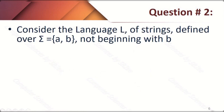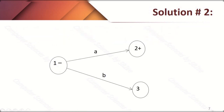Question number two: consider the language L of strings defined over sigma {a, b} not beginning with letter 'b'. The condition is that the machine must not begin with letter 'b'. We send the 'b' transition to the dead state, send the 'a' transition to the final state, and the rest of the machine is the same as question one.